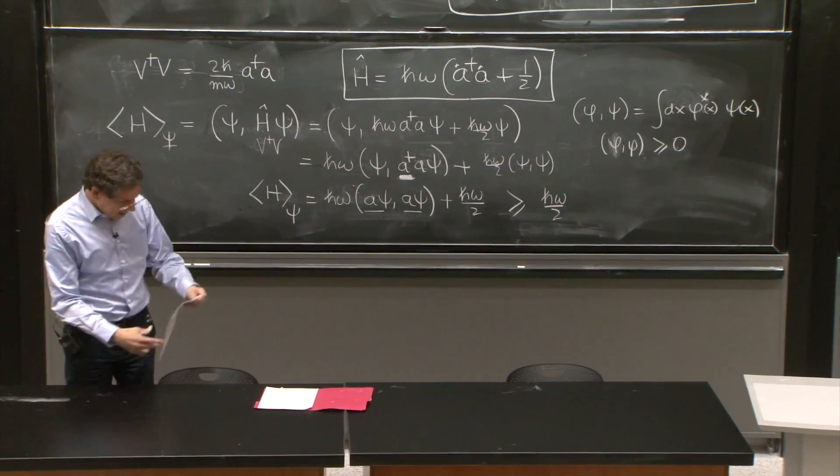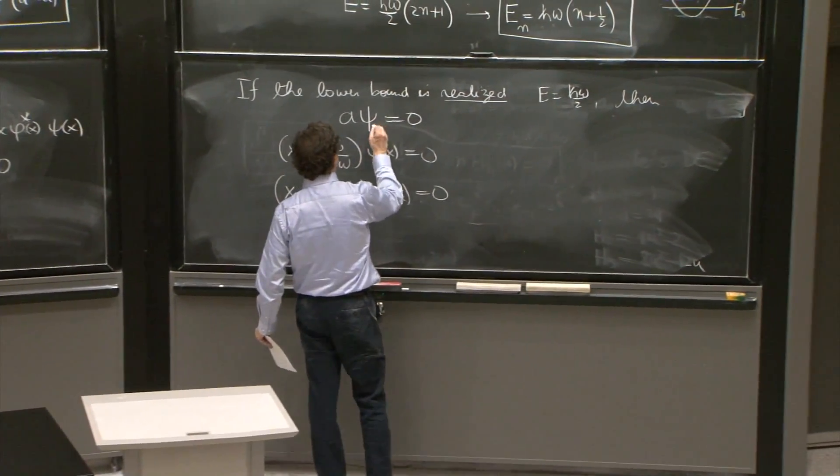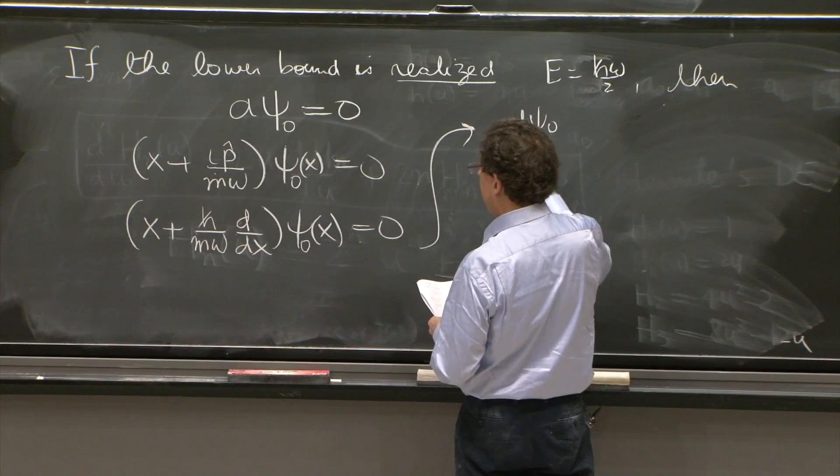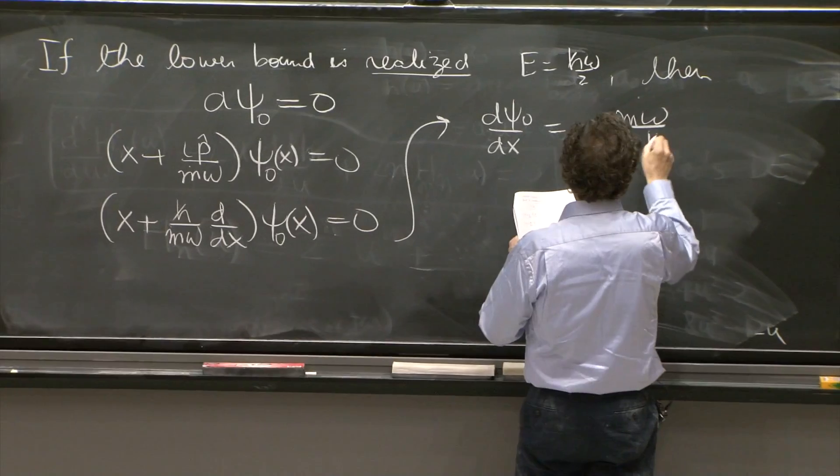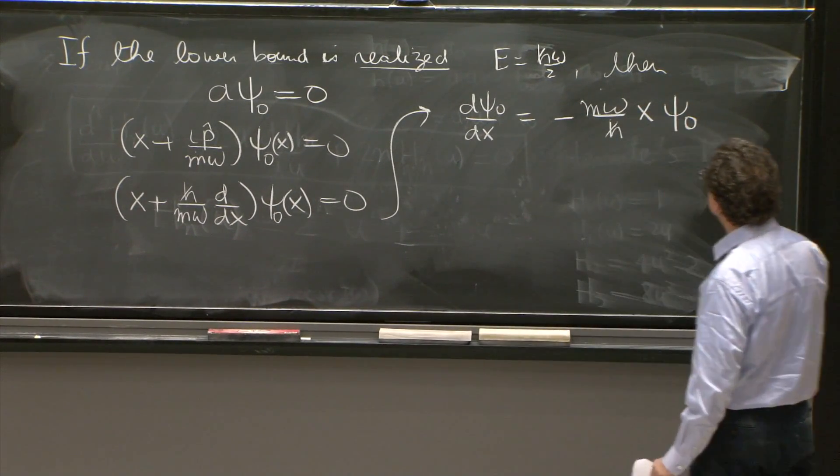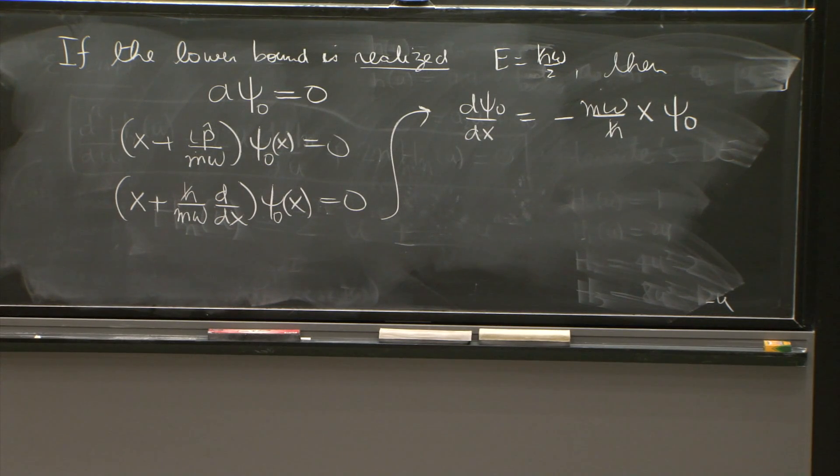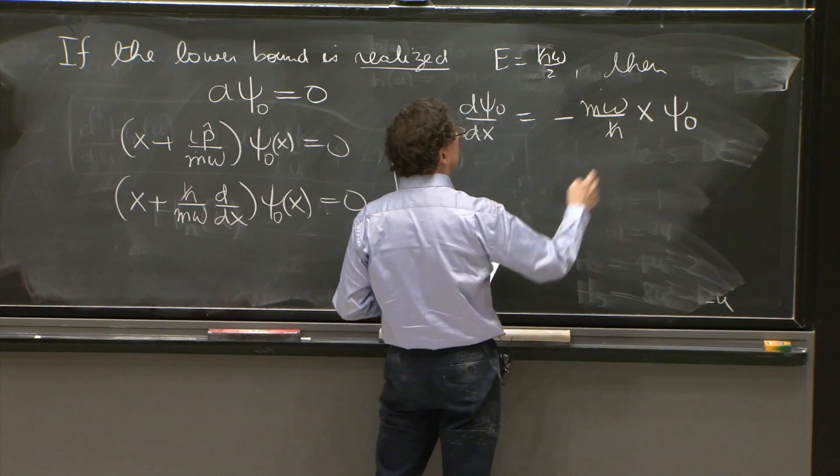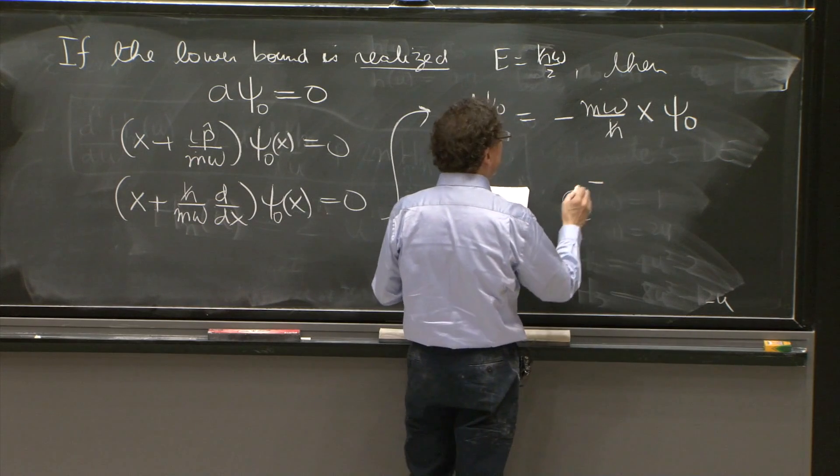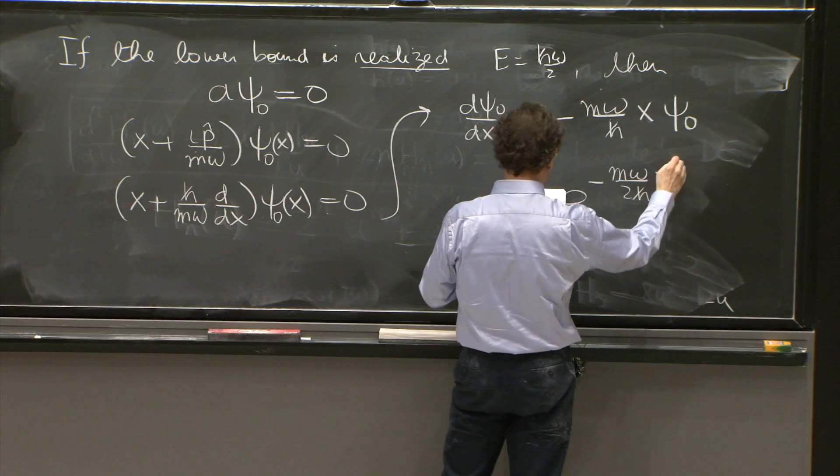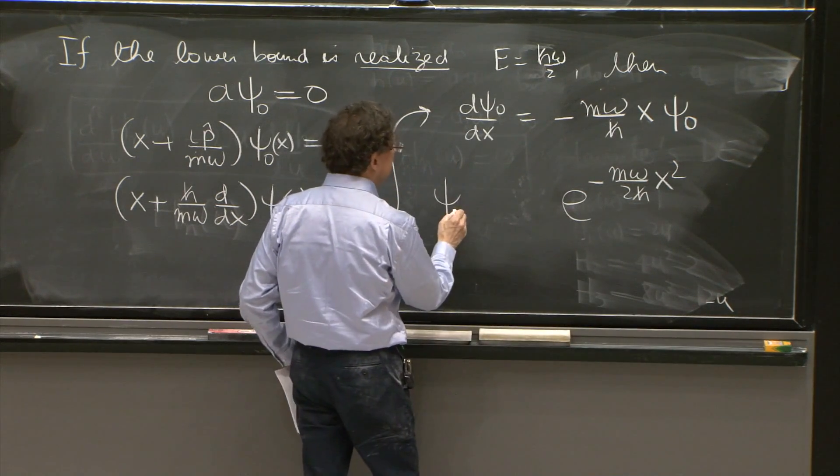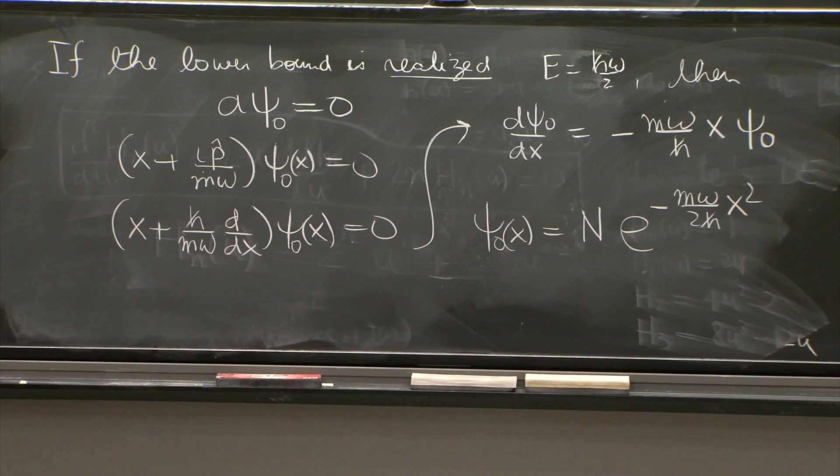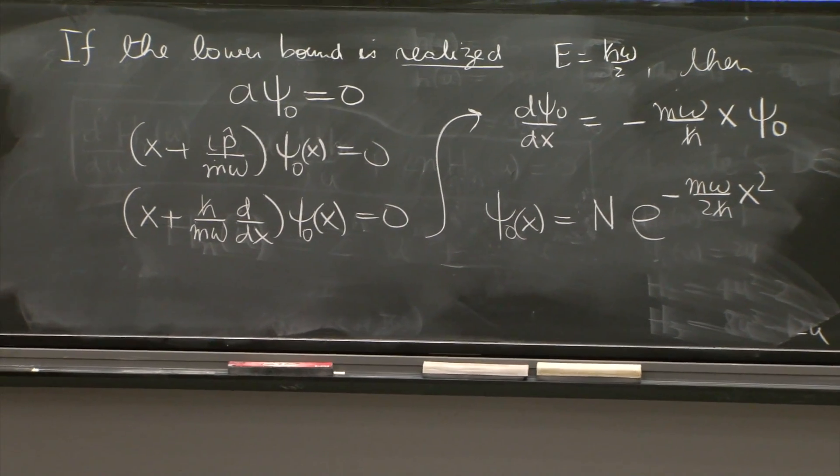So let's, of course, solve it. It doesn't take any time. Let's call this the ground state, if it exists. And this gives you d psi 0 dx is equal to minus m omega over h bar x psi 0. This can be integrated easily, or you can guess the answer. It's an exponential. Anything that differentiated gives you x times the same function is an exponential. e to the minus m omega over 2 h bar x squared is the solution.